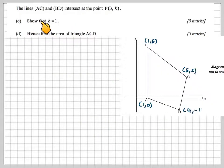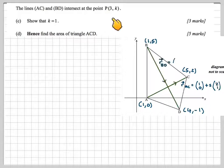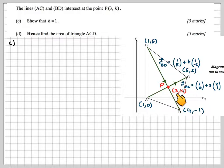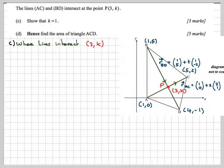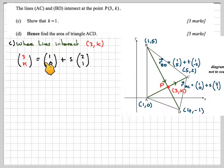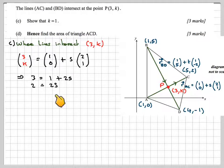So the lines AC and BD intersect at the point (3,K). So this is the point where they intersect. This is (3,K). You have to show that K is equal to 1. So let's just take this vector equation here, this line. Where the lines intersect, (3,K), then (3,K) must be on this line, which is (3,K) = (1,0) + S(2,1). And then we can solve for S using the X component. We get 3 = 1 + 2S. 2 = 2S. And therefore, we can see that S is equal to 1.